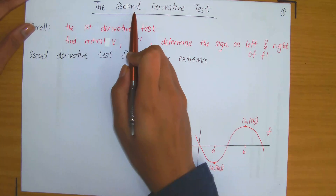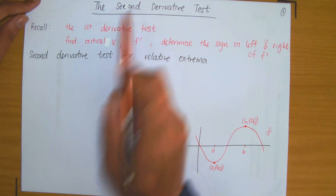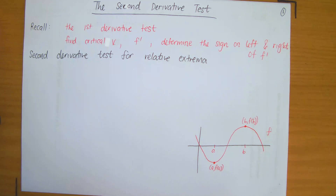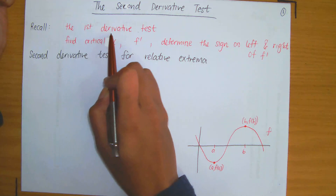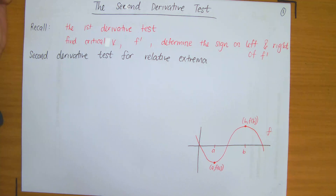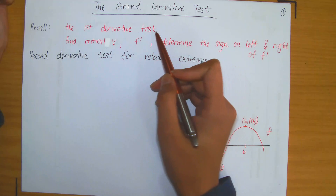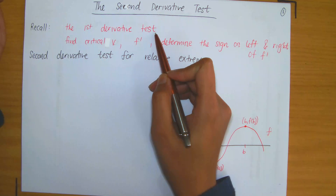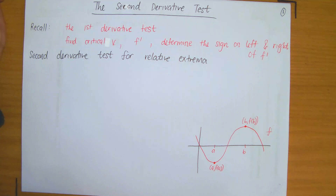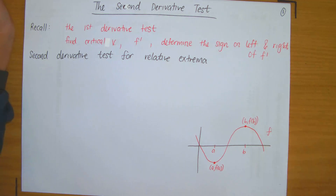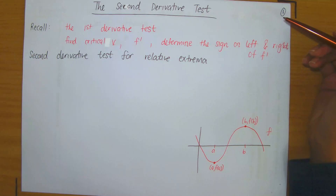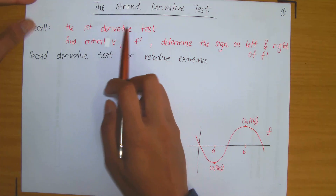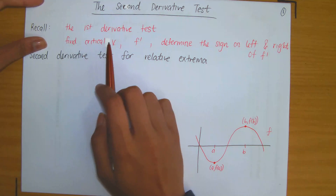Today we're going to be discussing the second derivative test. Before we get to the second derivative test, I'd like you to remember the first derivative test. The first derivative test was a test or a method which allowed us to determine relative extrema of a given function, meaning you were able to determine if a given point was a relative maximum, a relative minimum, or neither. The test for the first derivative test involved the following.